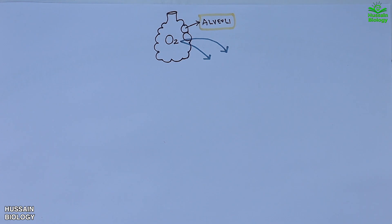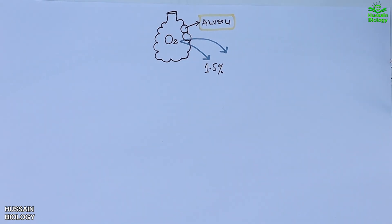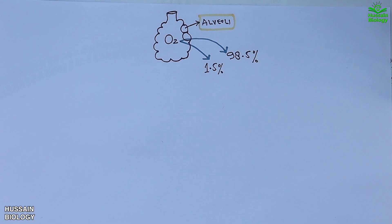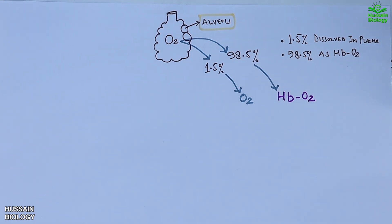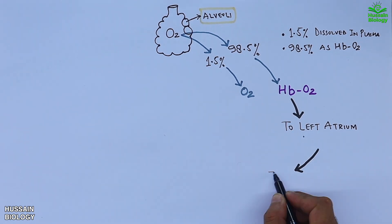Oxygen diffuses across the alveolar membrane into the blood. About 1.5% of the oxygen is simply dissolved in plasma, while the remaining 98.5% binds to hemoglobin molecules inside red blood cells, forming oxyhemoglobin (HbO2). This oxygen-rich blood is then carried to the left atrium of the heart, which pumps it towards tissues.